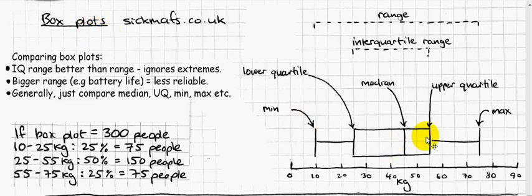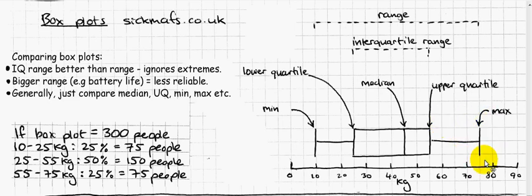Incredibly easy. This is a box plot. This is the minimum value in a group of data, and that's the maximum value of the data. The maximum value here is 75, the minimum is 10, and the median is 45.